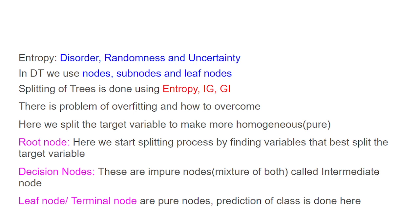We split the target variable to make it more homogeneous — homogeneous meaning purity. For example, if the candidate will pass, that is pure; if fail, that is also pure. But 5 pass and 4 fail is impure — not homogeneous. The root node is where we start the splitting process by finding variables that best split the target variable.